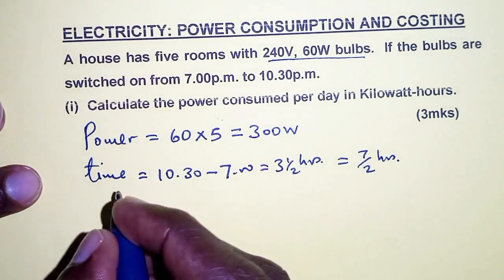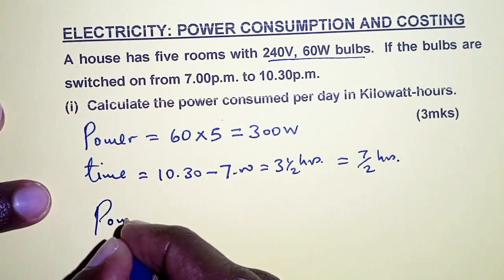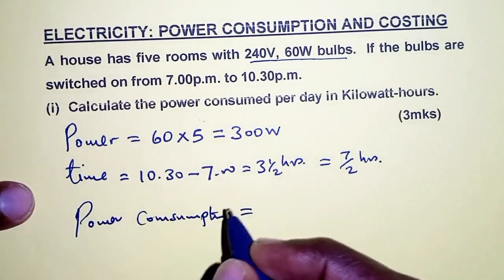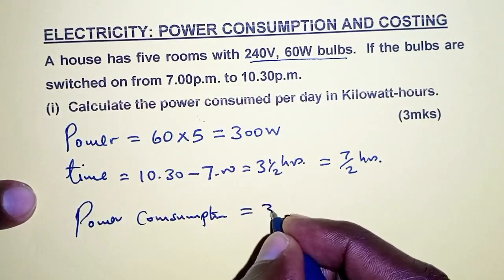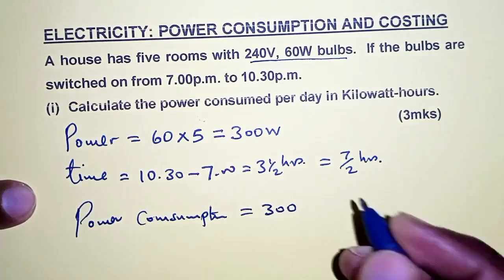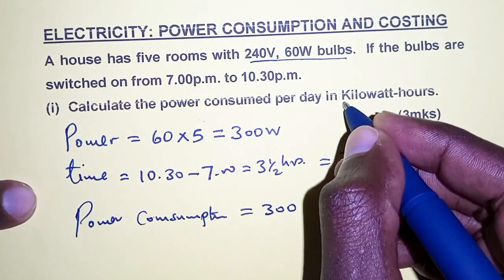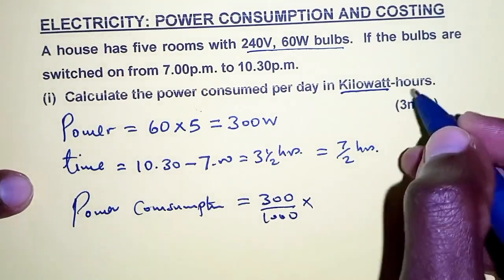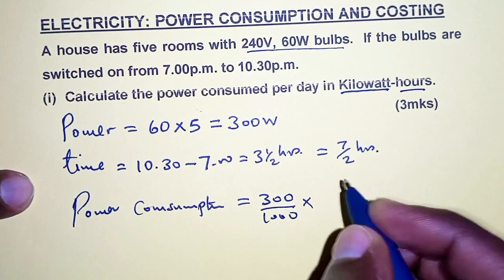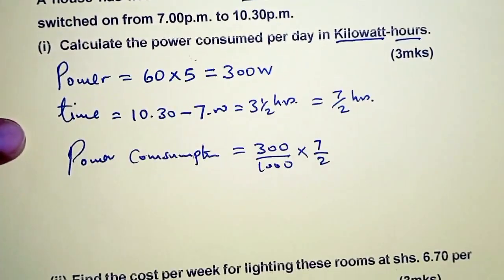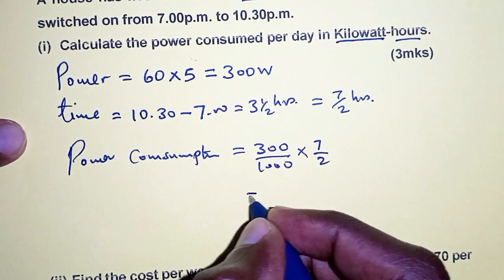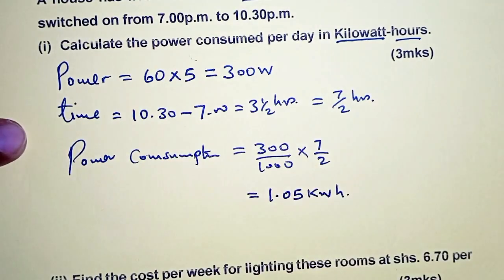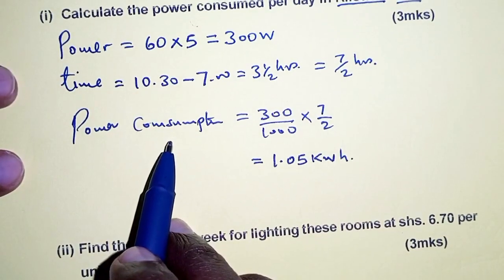Now we can calculate the power consumption. Power consumption is given by power times time. The power is 300 watts, but we need it in kilowatts, so we divide by 1000, then multiply by the time of 7 over 2 hours. Multiplying these gives us 1.05 kilowatt hours, and that is the power consumption per day.